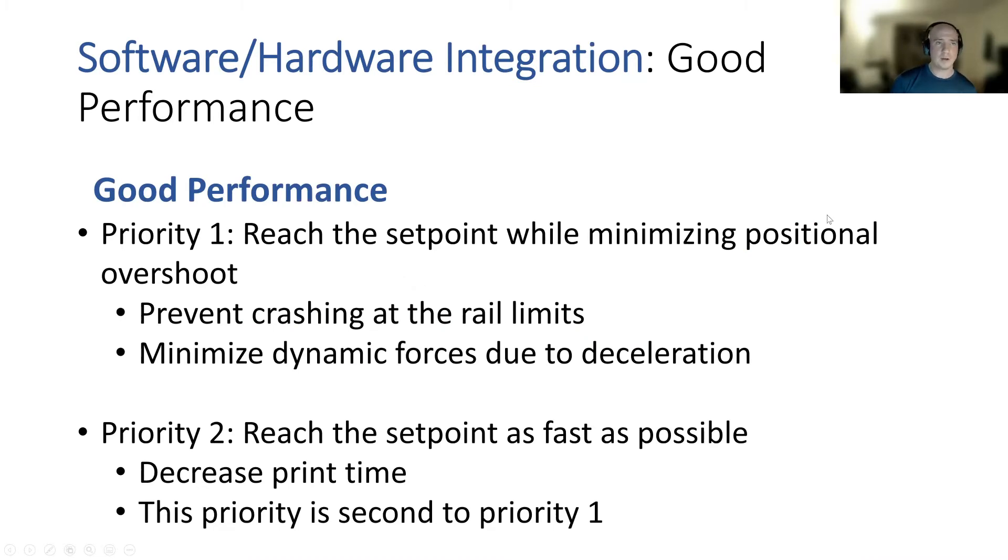Looking at our software and hardware integration, we have to ask ourselves, what's good performance for this system? So we have two priorities here. The first is to reach the set point while minimizing positional overshoot. This prevents crashing at the rail limits on your lead screw assembly and also minimizes dynamic forces that the system is going to experience due to deceleration.